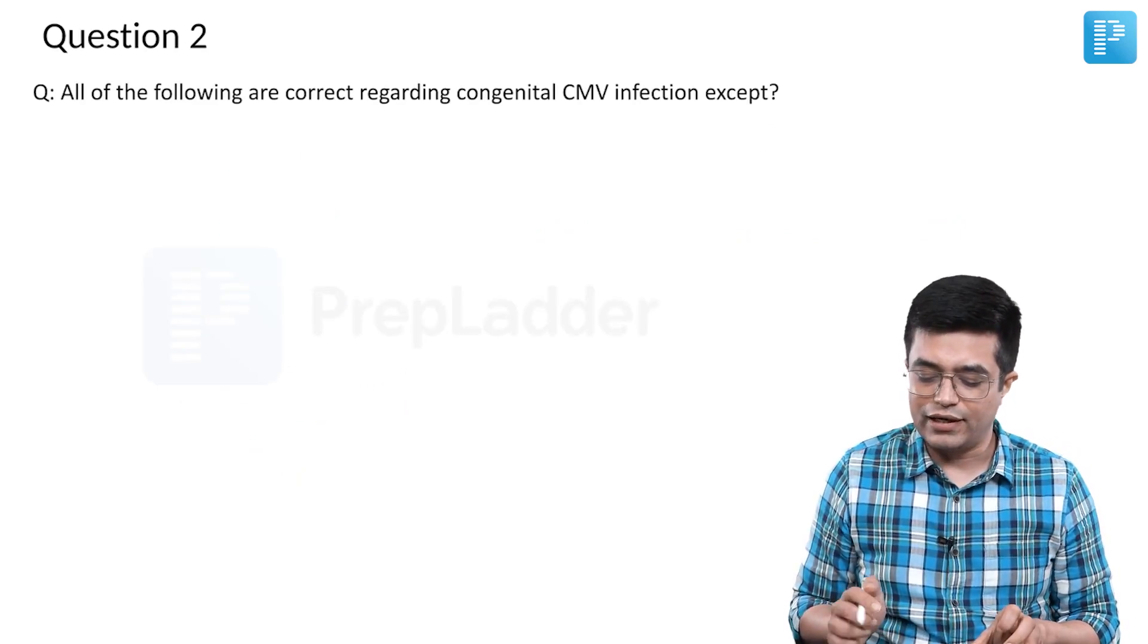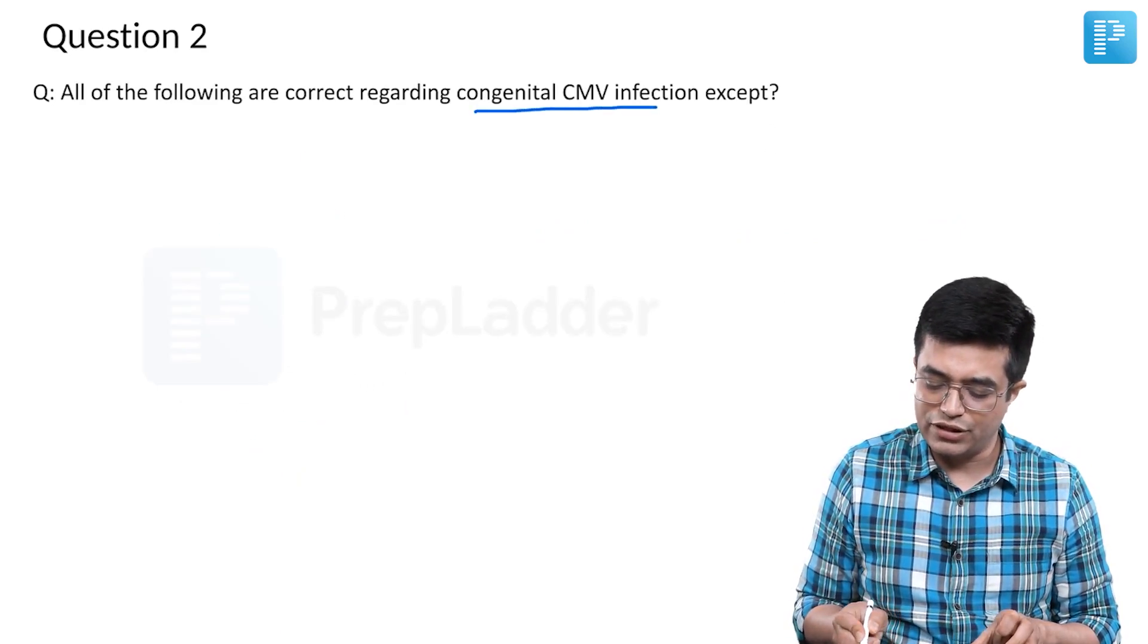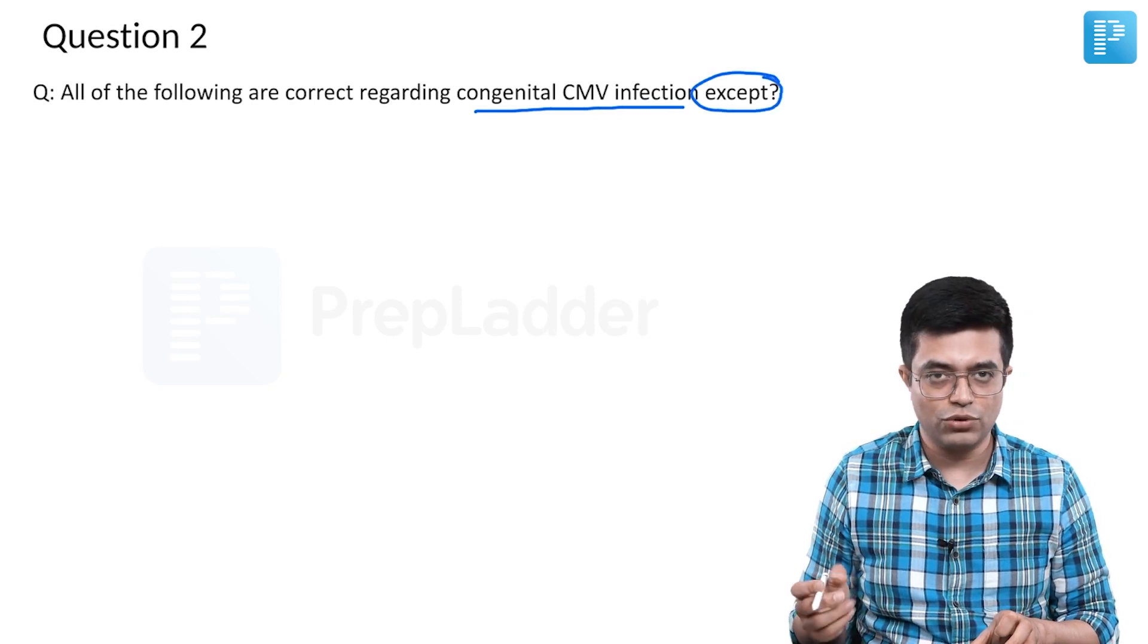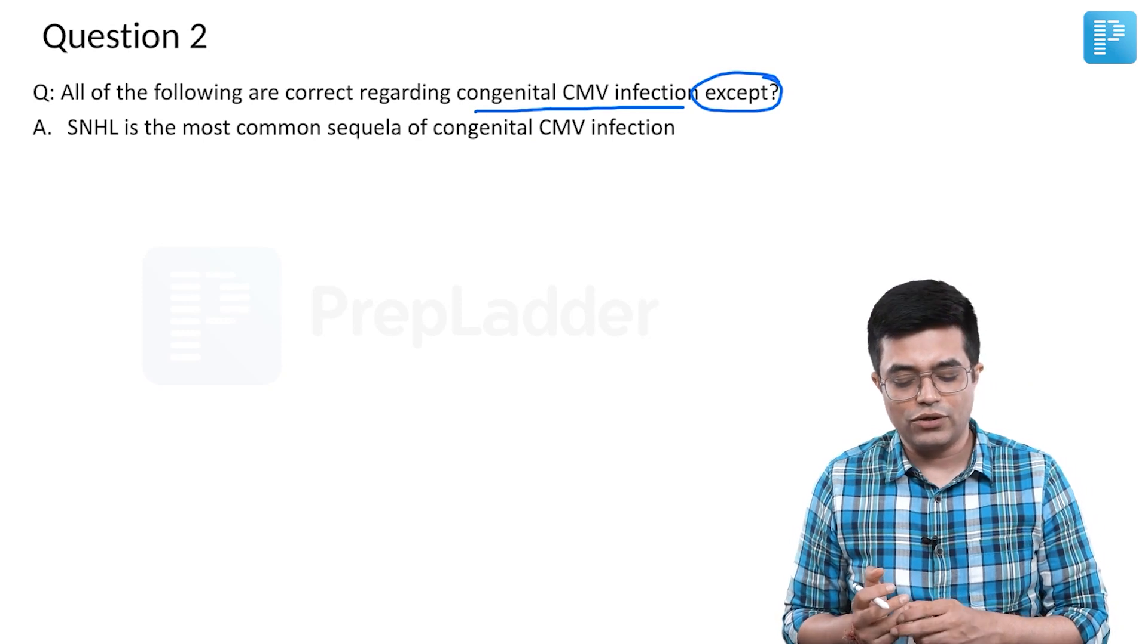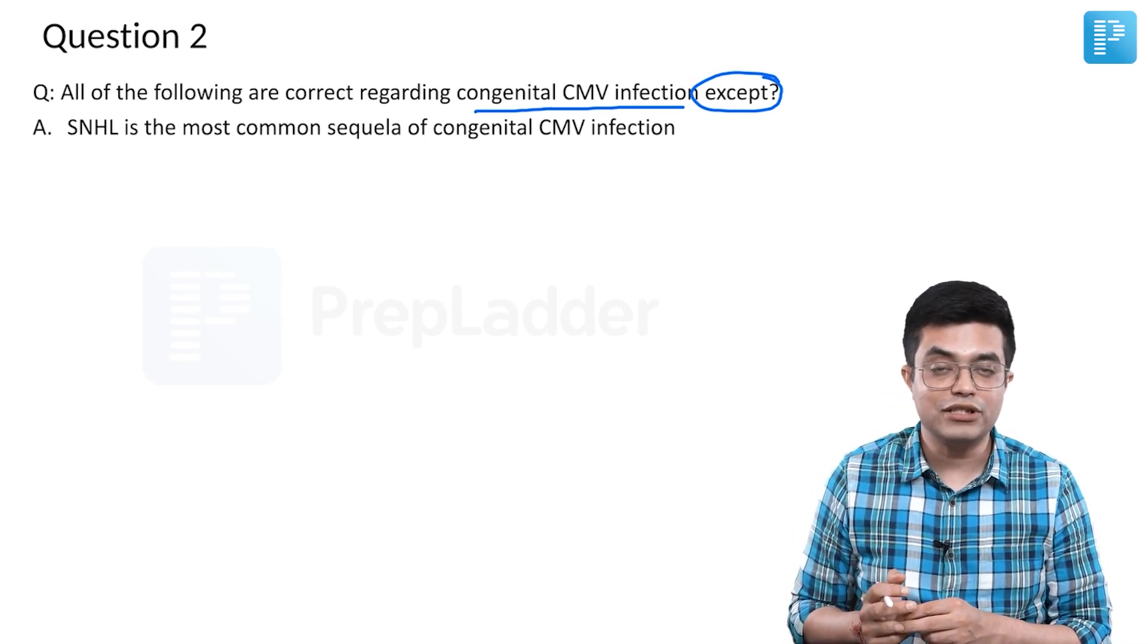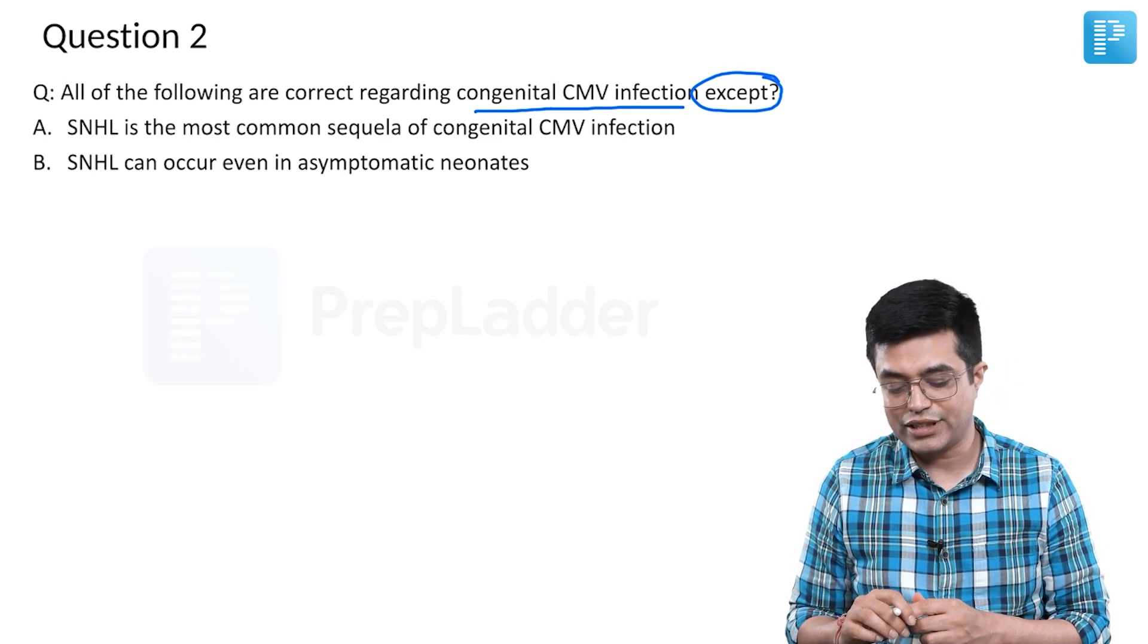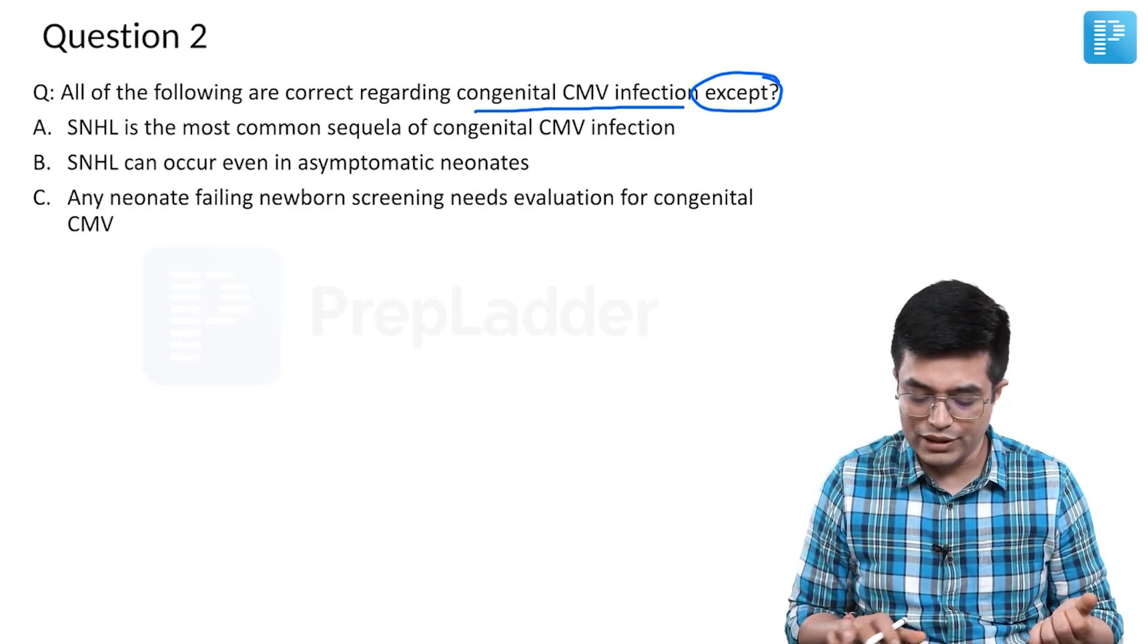All of the following are correct regarding congenital CMV infection except - so there are four statements mentioned. First option is sensory neural hearing loss is the most common sequela of congenital CMV. Second is sensory neural hearing loss can occur even in asymptomatic neonates.